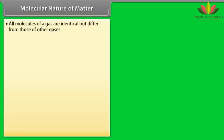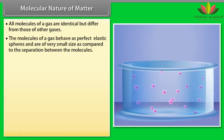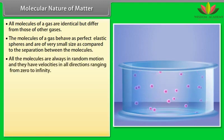Molecular nature of matter. All molecules of a gas are identical but differ from those of other gases. The molecules of a gas behave as perfect elastic spheres and are of very small size as compared to the separation between the molecules. All the molecules are always in random motion and they have velocities in all directions ranging from zero to infinity.